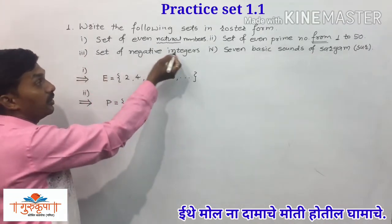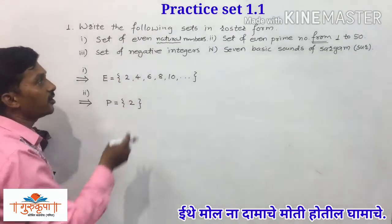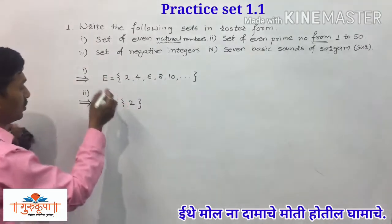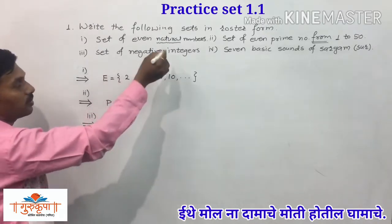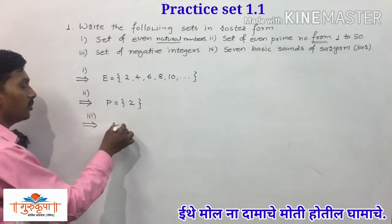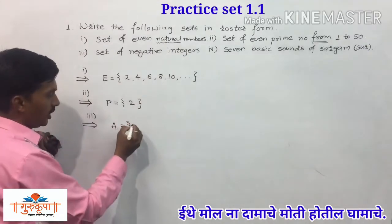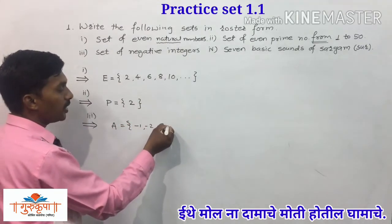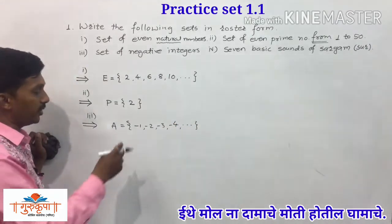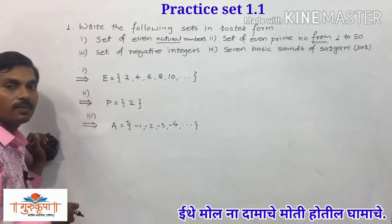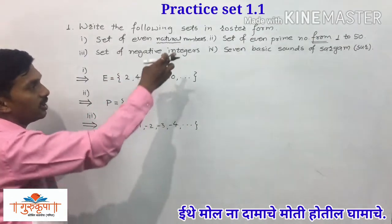We have the third example: set of negative integers. We have to write the set of integers, but they should be negative. So the answer of the third example is: A = {-1, -2, -3, -4, ...} and so on. We have infinite negative integers, but they start from minus 1. This is the answer of the third example.